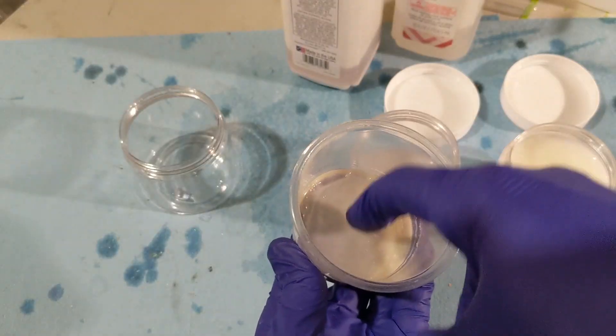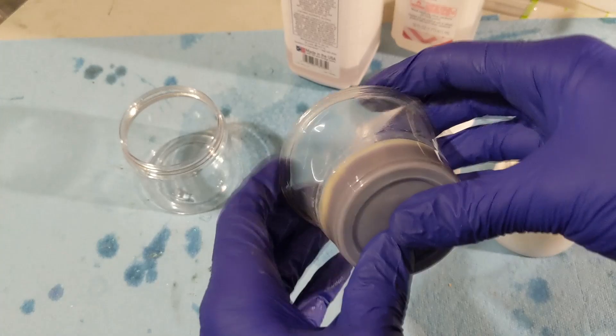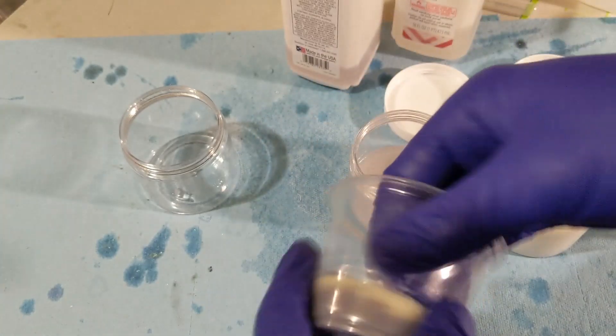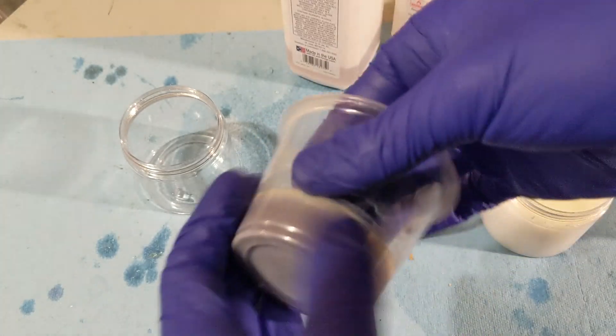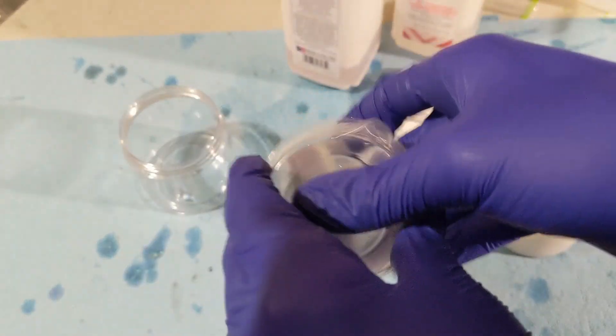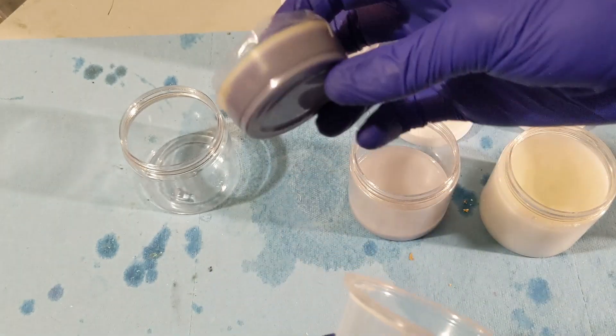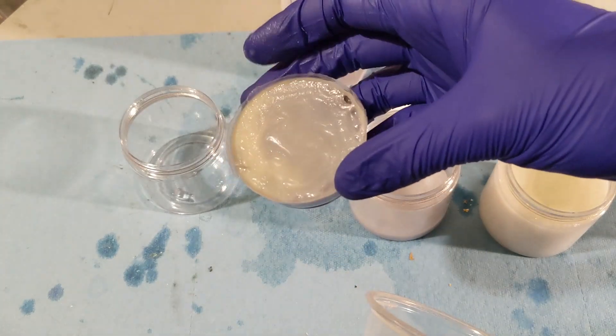And after our resin has cured we'll go ahead and pop it out of our plastic cup and then dispose of that and then we can use our cup to clean out some more bottles later. I should note that I do this with all resins, even the water washable resins. Clean the bottle with alcohol and cure the resin before then just throwing it away.